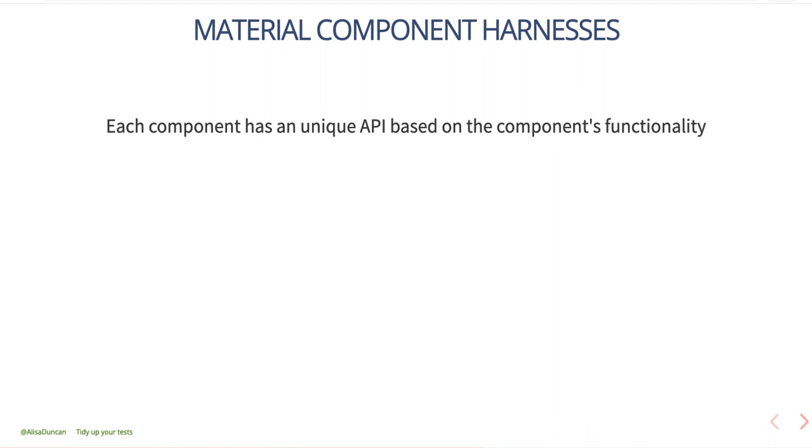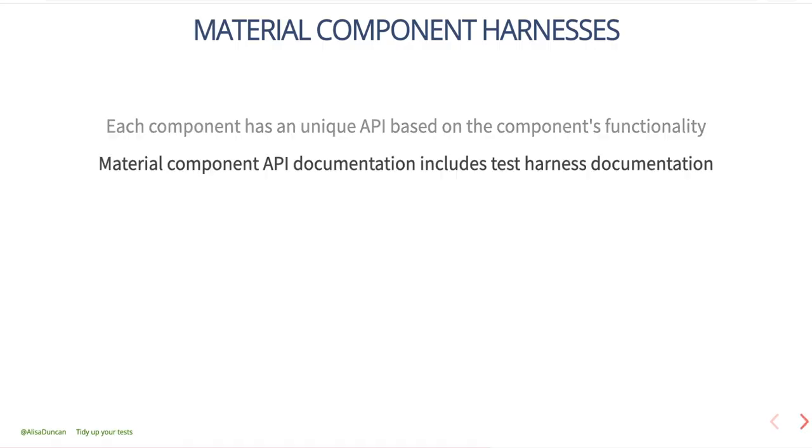We looked at the CDK testing API methods, but we didn't talk about Material component harnesses themselves. All Material component harnesses implement the base CDK testing API and will additionally have a unique API based off the component's functionality. For example, MatButtons will have click, and MatCheckbox has getLabel, toggle, and getChecked status. Luckily, the Material component API documentation includes the test harness documentation as well — on material.angular.io, on the API tab for a given component, there is a section for test harnesses where you can identify the public API and any available querying filters.